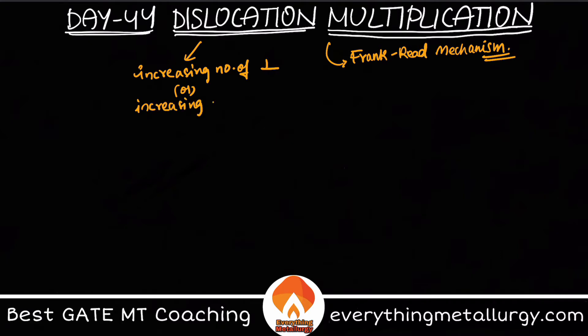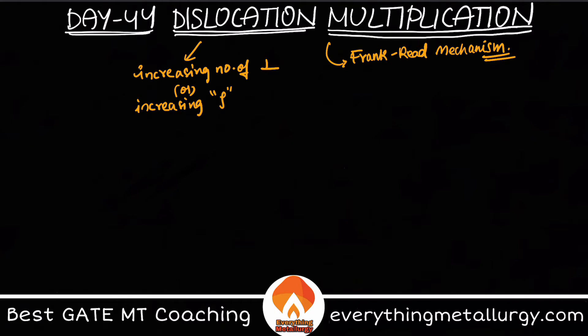Increasing the number of dislocations is also called increasing the dislocation density, denoted by rho. In a given space or given volume, you are trying to increase the number of dislocations — that is what dislocation multiplication actually does.